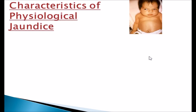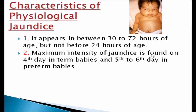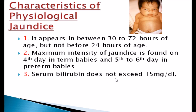Next are the characteristics of physiological jaundice. The jaundice appears between 30 to 72 hours of age, but not before 24 hours of age — so not before one day. Maximum intensity of jaundice is found on the 4th day in term babies, and on the 5th to 6th day in preterm babies. Serum bilirubin does not exceed 15 mg/dL, remaining in the range of 5 to 15 mg/dL.